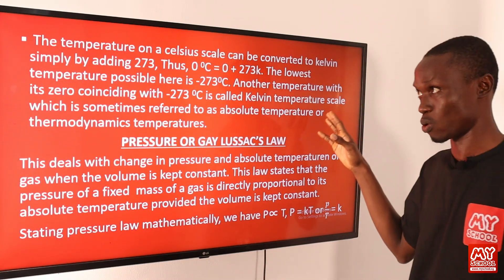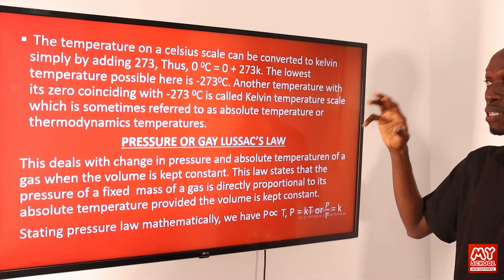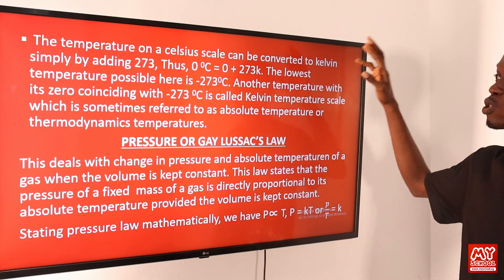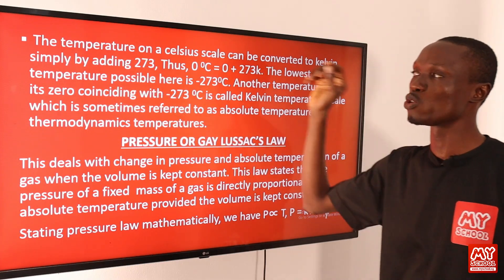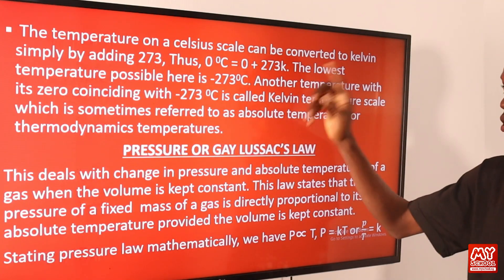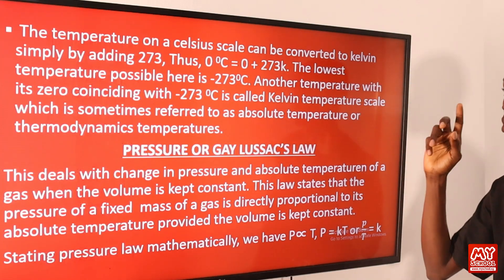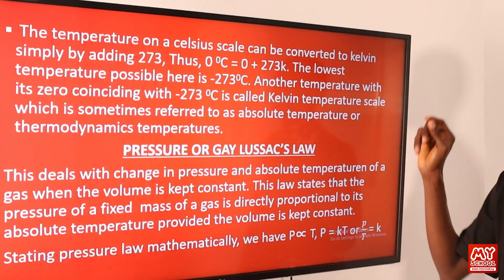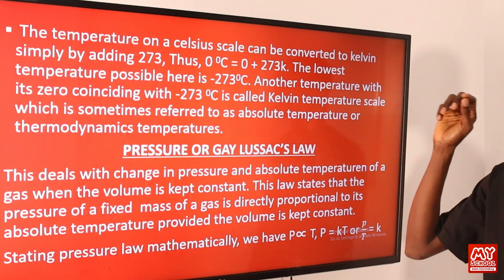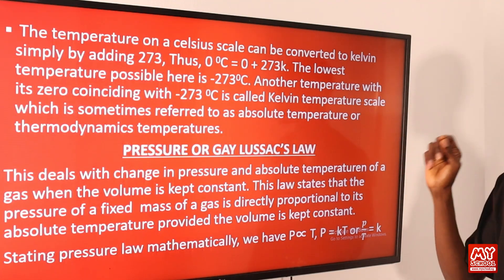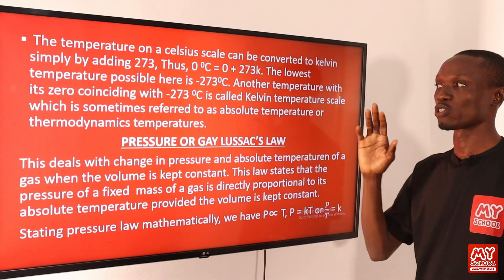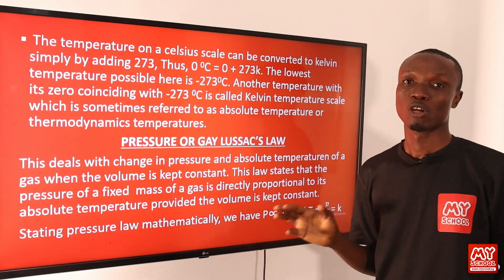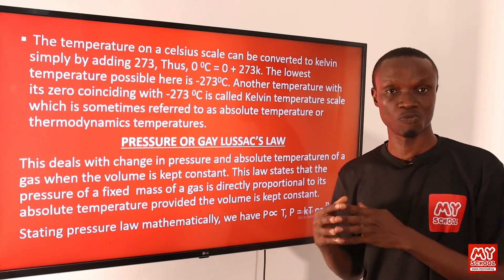Using Charles' Law, we can convert from degrees Celsius to Kelvin. The temperature on the Celsius scale can be converted to Kelvin simply by adding 273. So 0°C equals 0 + 273 Kelvin. The lowest temperature possible is minus 273°C. The temperature scale with zero coinciding with minus 273°C is called the Kelvin temperature scale, sometimes referred to as absolute temperature or thermodynamic temperature.